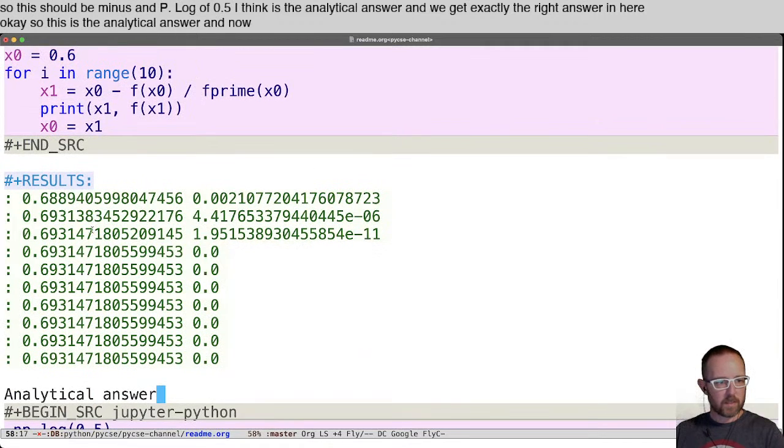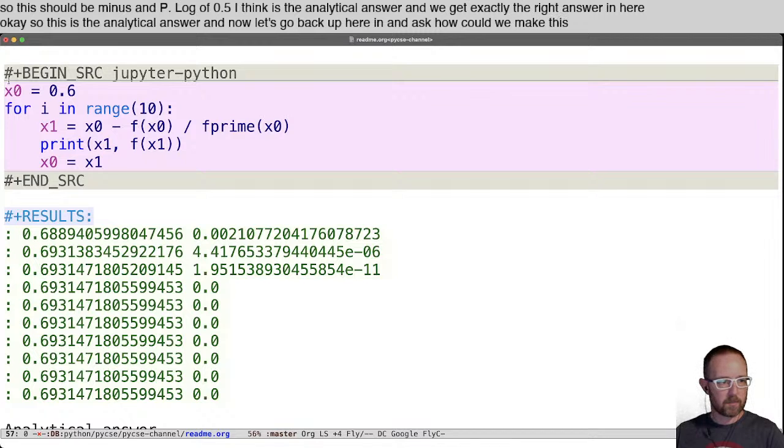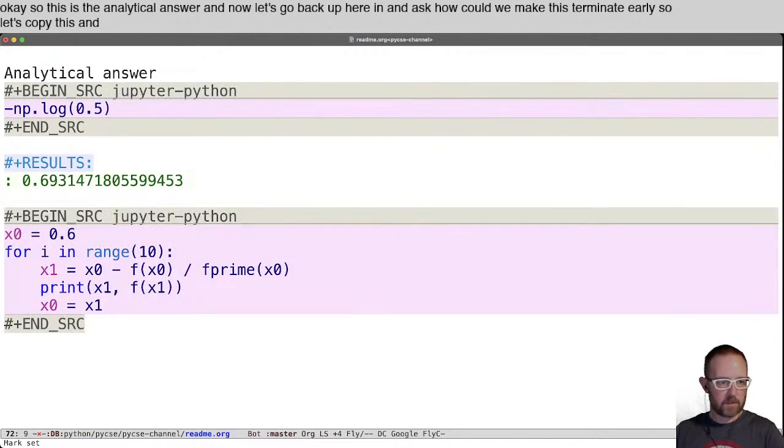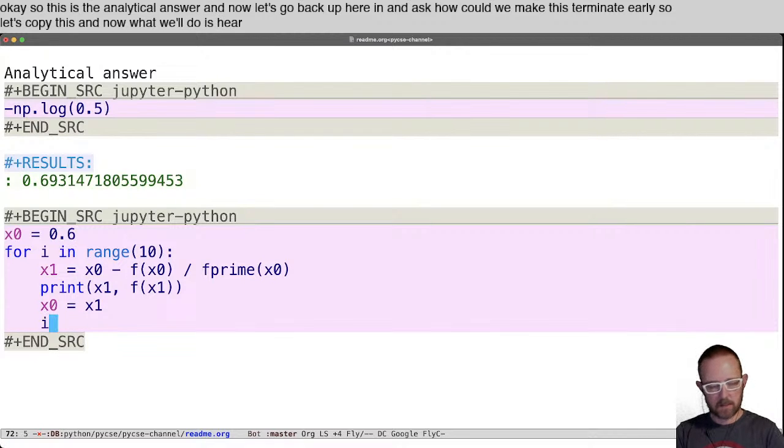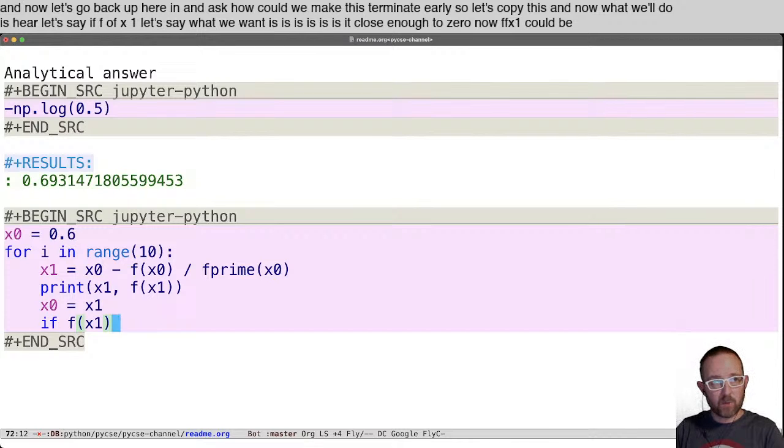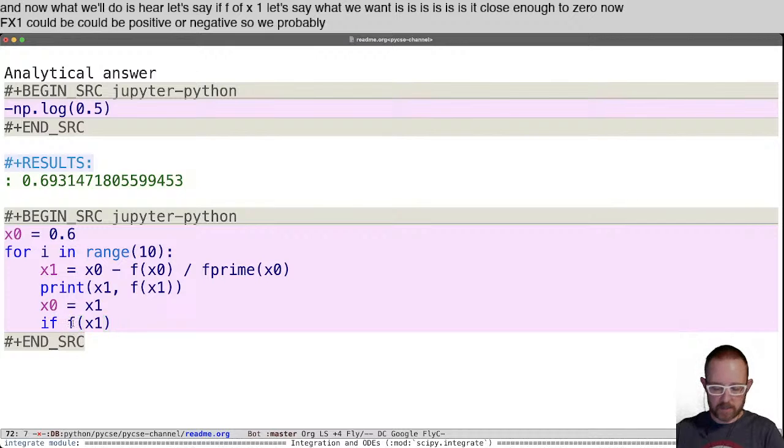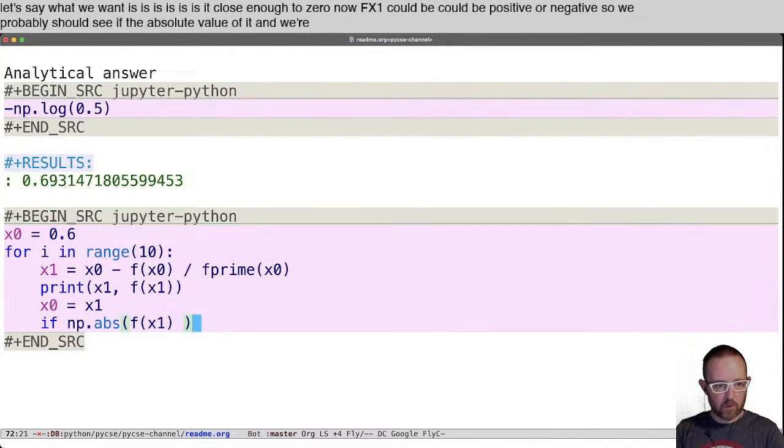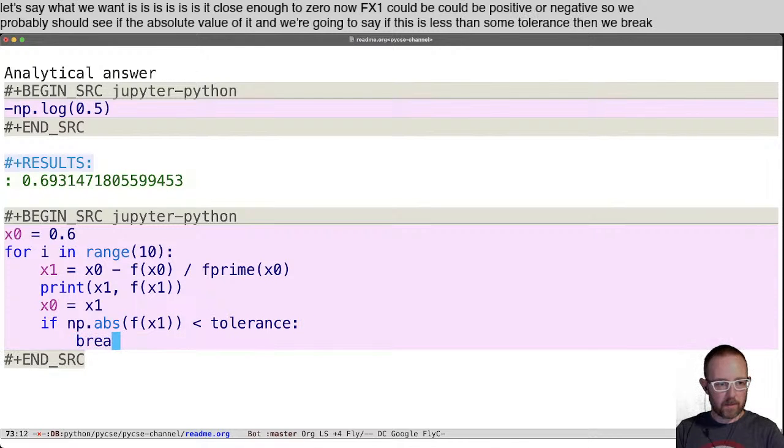And now let's go back up here and ask, how could we make this terminate early? So let's copy this. And now what we'll do is here, let's say if f of x1, let's say, what we want is, is it close enough to 0? Now f of x1 could be positive or negative. So we probably should see if the absolute value of it. And we're going to say if this is less than some tolerance, then we break.